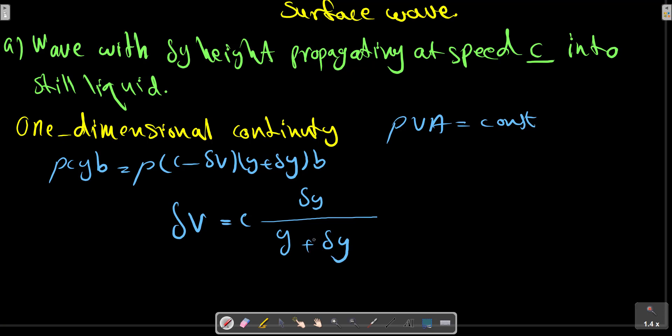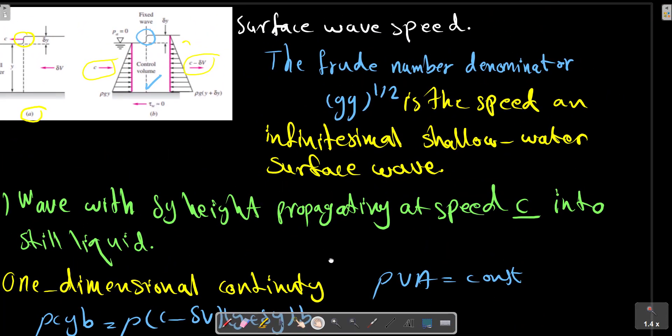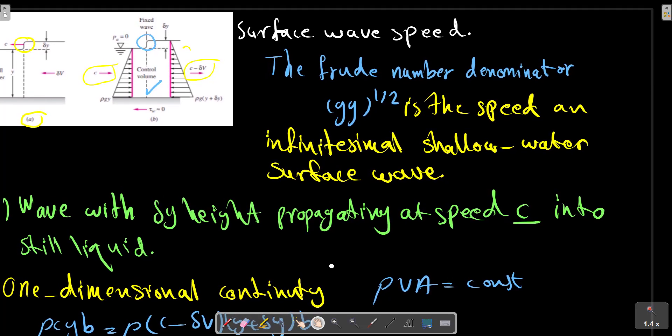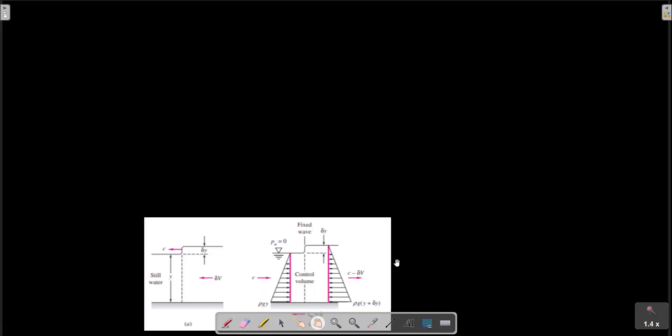This is analogous to the previous section for gas dynamics. The velocity change delta V - we conclude that the surface wave is small if the wave is weak, so delta Y is too small compared to Y. If we neglect bottom friction in the short distance across the wave as shown in the picture here, the momentum relation is a balance between the net hydrostatic pressure force and the momentum.